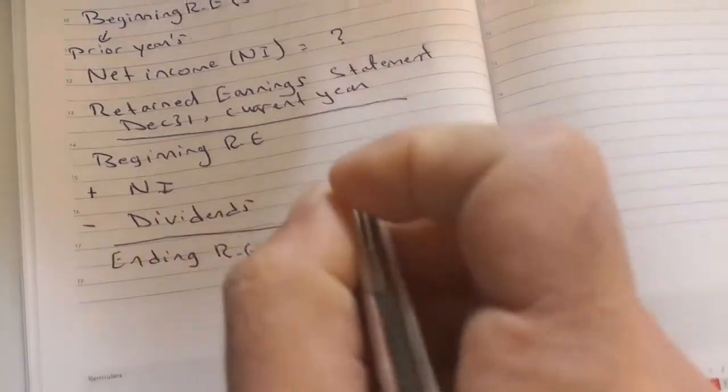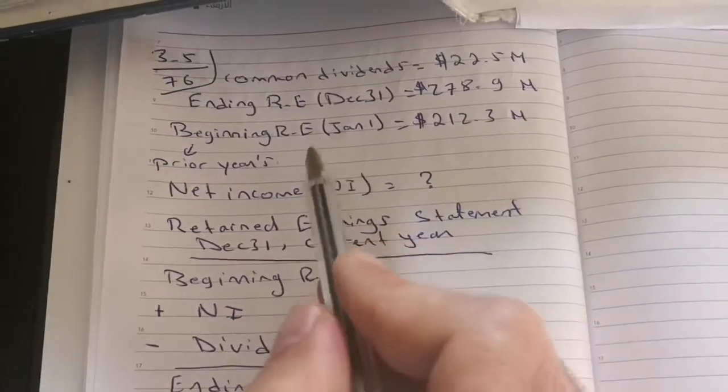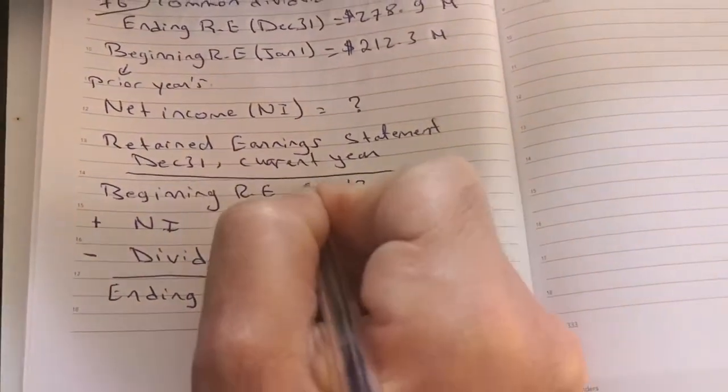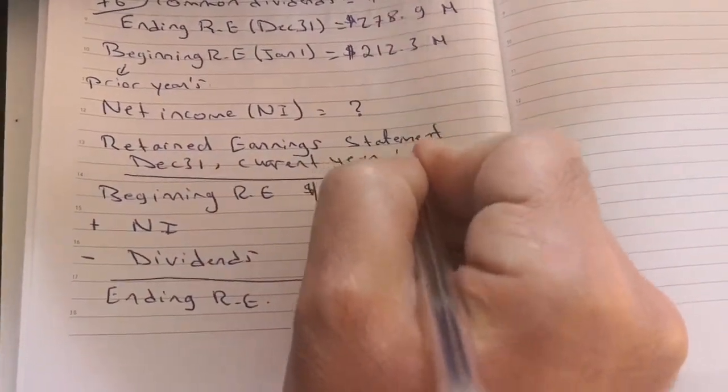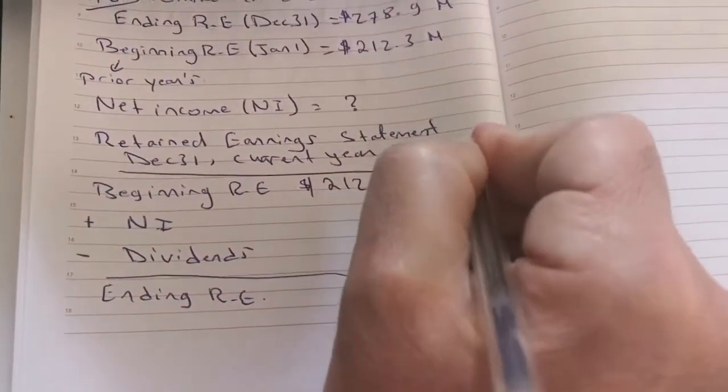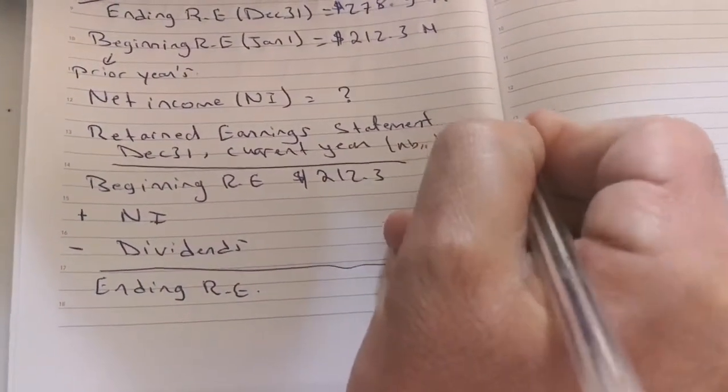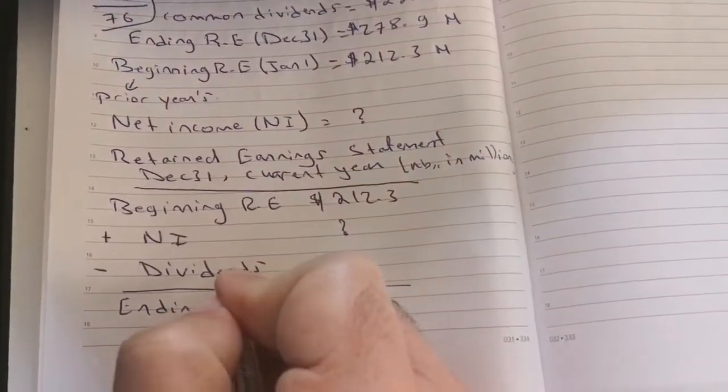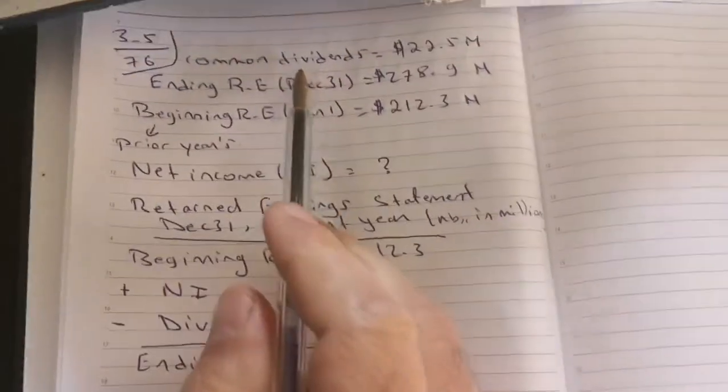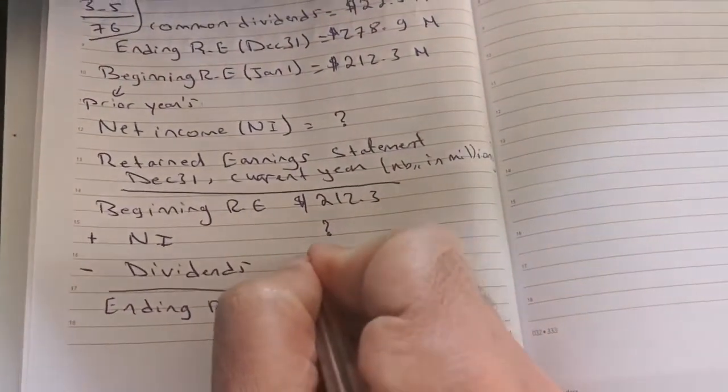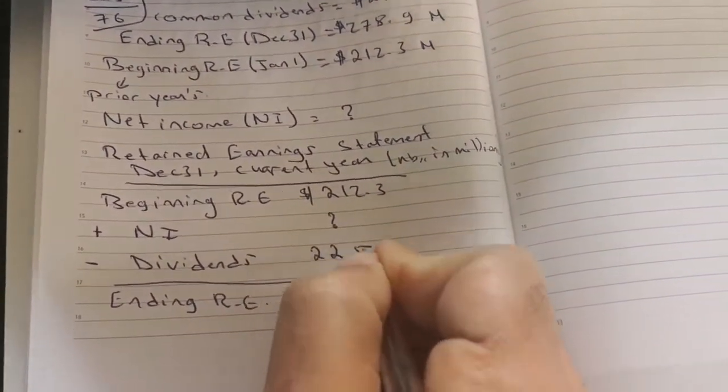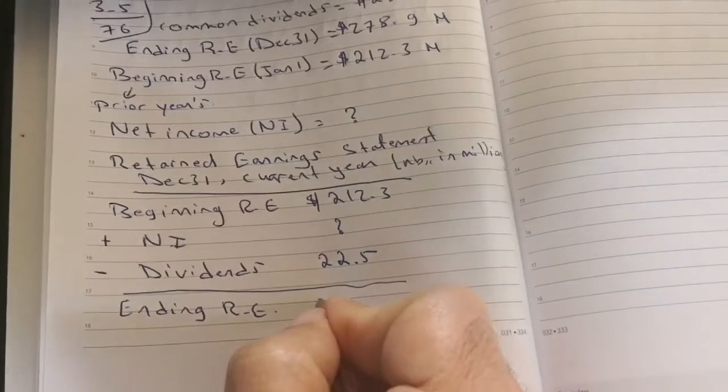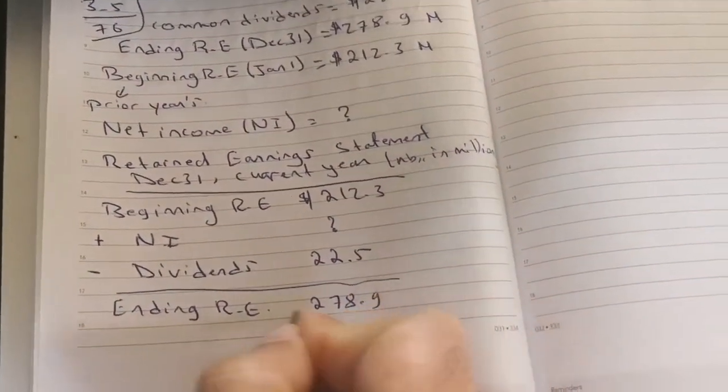So from the given, beginning retained earnings is given: $212.3 million. Net income is missing. Less dividends: $22.5 million. Equal ending retained earnings: $278.9 million.